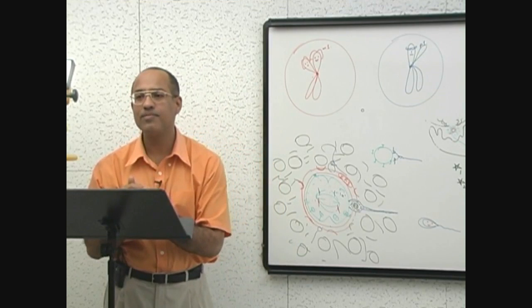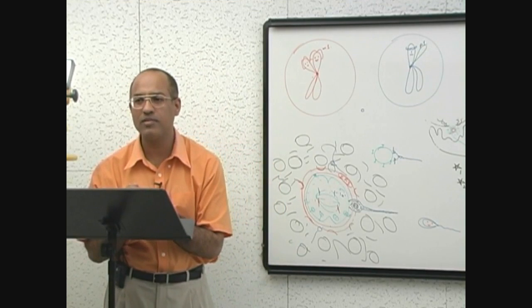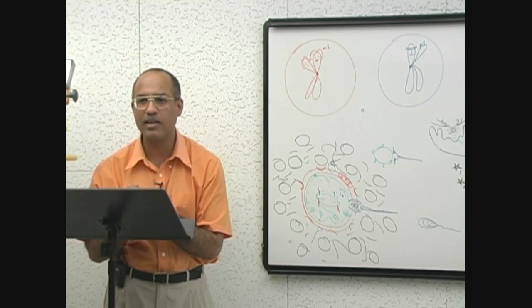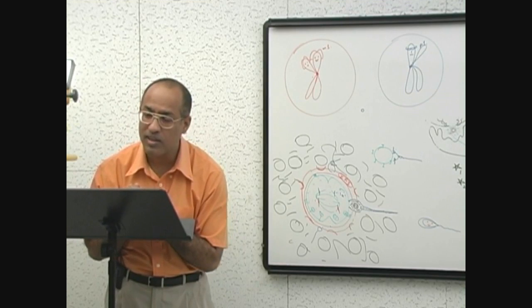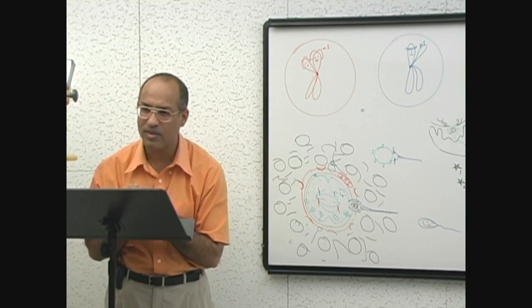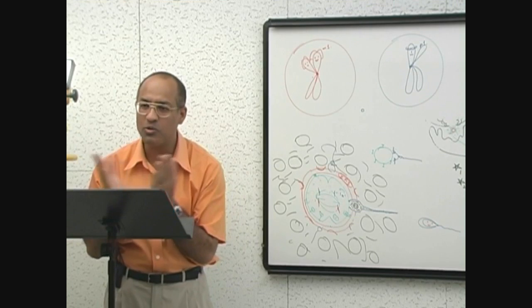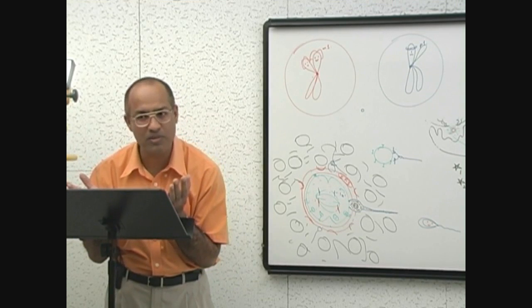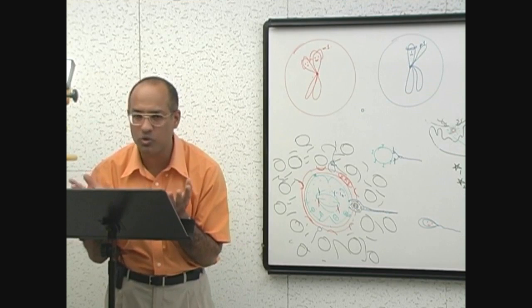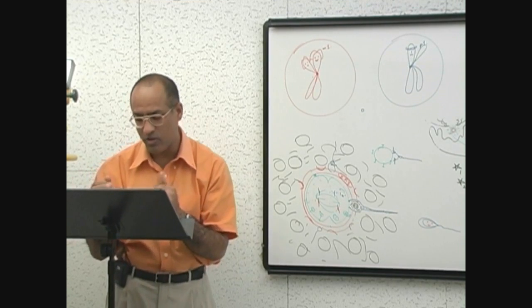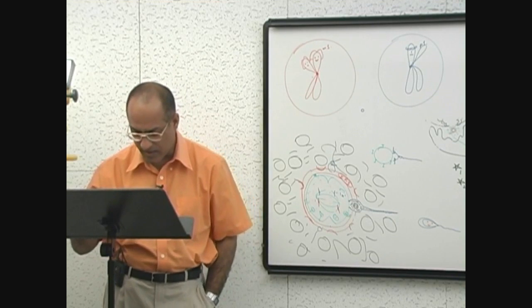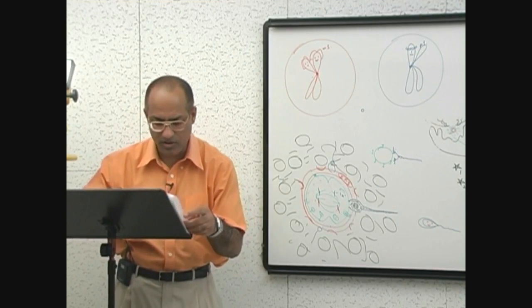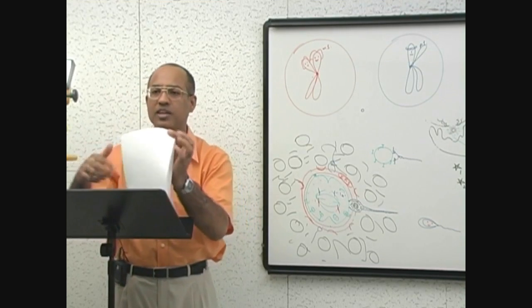Third is, third main result of fertilization is metabolic activation of the ovum and initiation of cleavage. So that one cell go into two cell. Because if sperm is not there, do you think ovum alone will go into two cell stage? No. Right? So, third result of fertilization is initiation of cleavage. Is that right? Any question up to this?